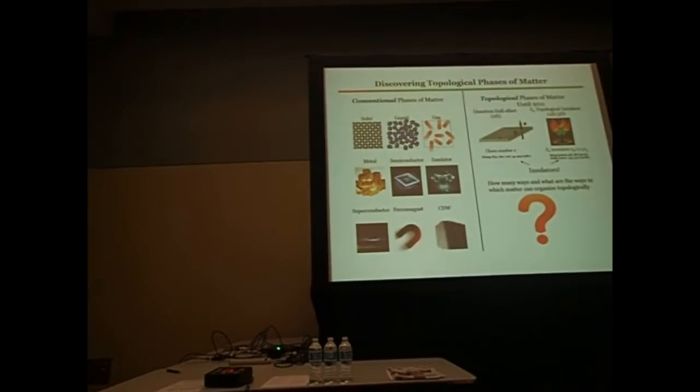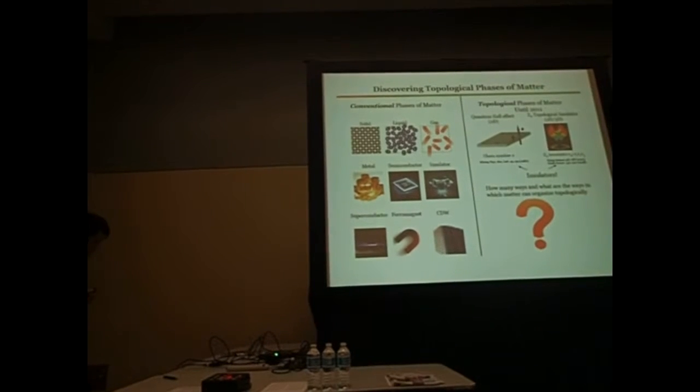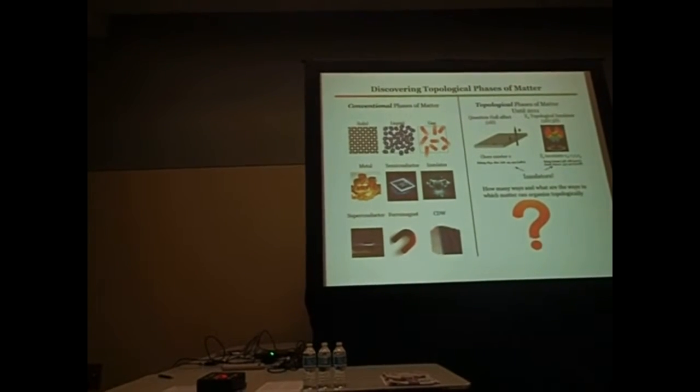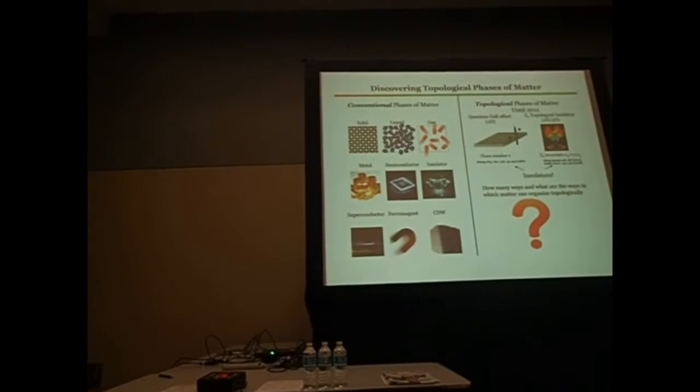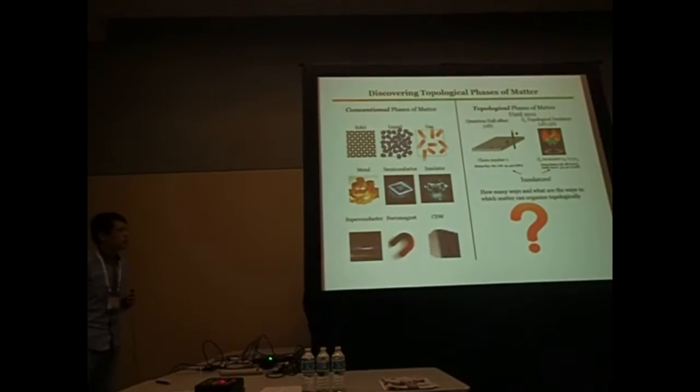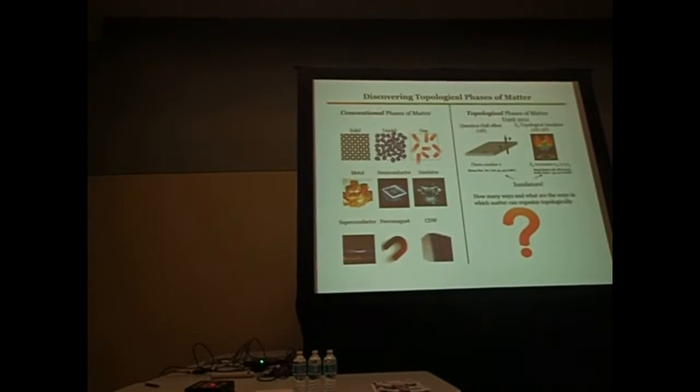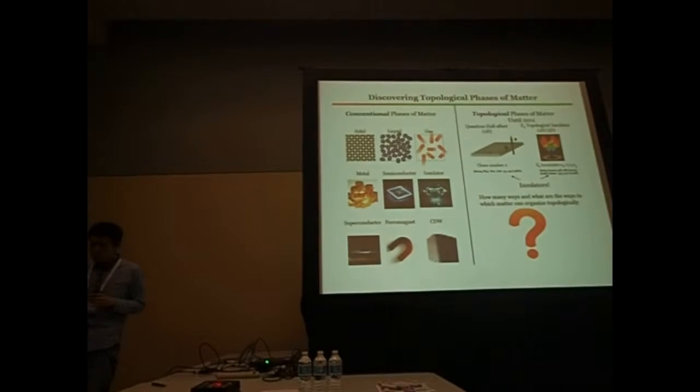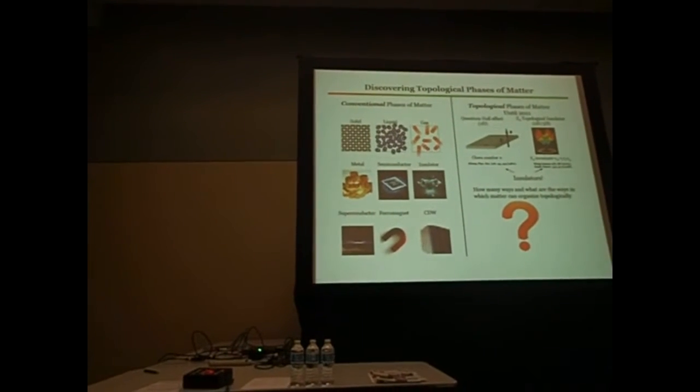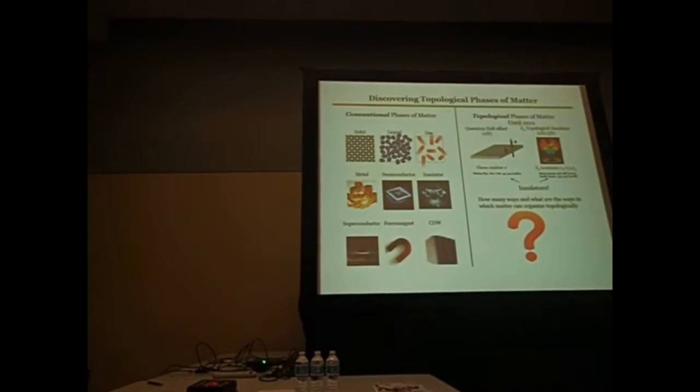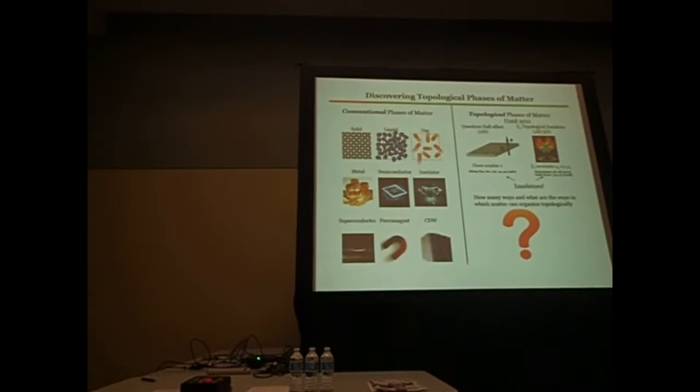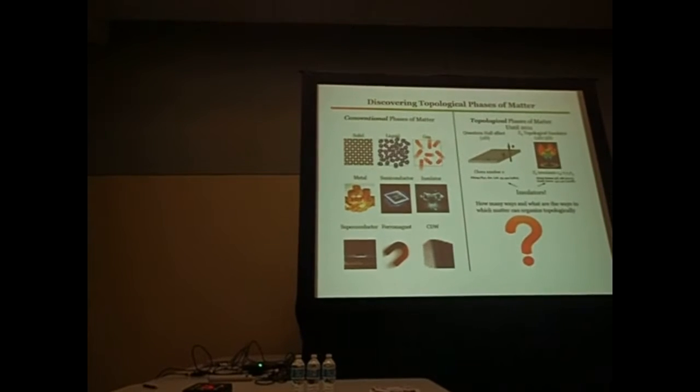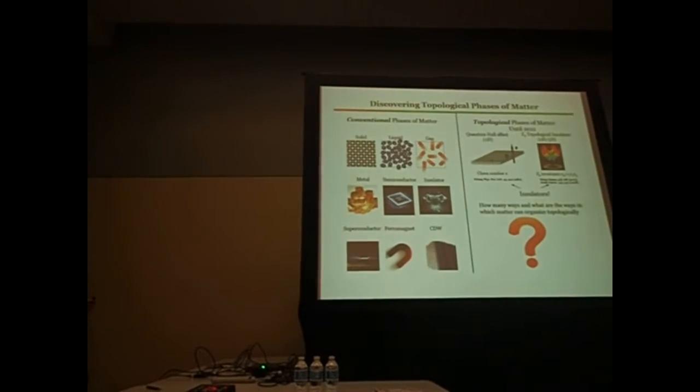Our goal is to discover new topological phases of matter. Quick introduction: topological phases are in contrast to conventional phases. They're not described by local order parameters but rather by a global number, the topological invariant. Up until 2011, there were only two mainly experimentally discovered topological phases: quantum Hall and Z2.